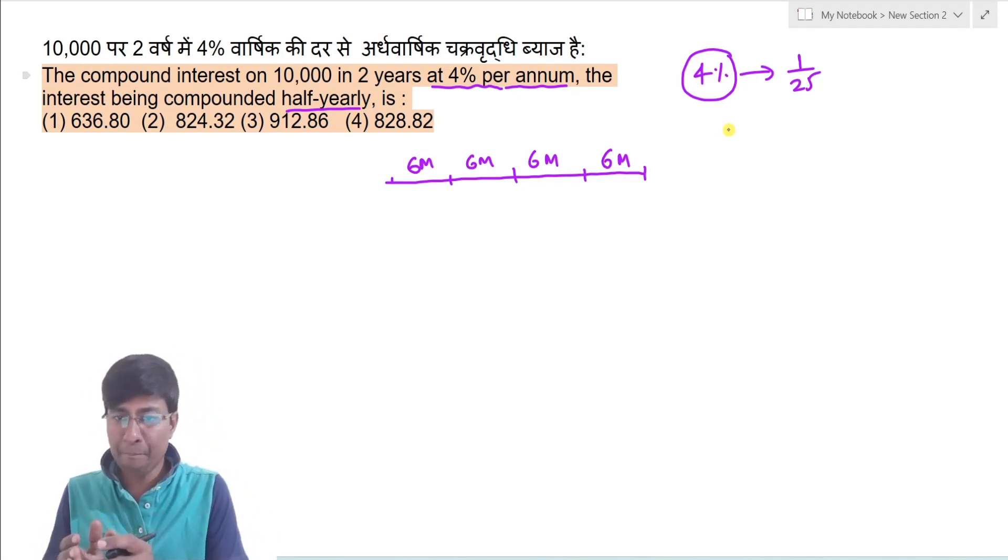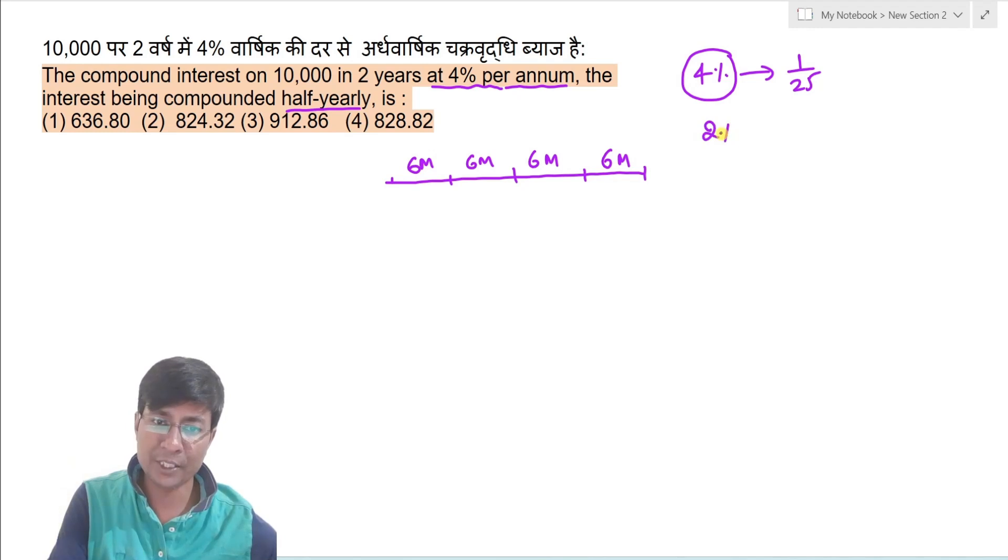Agar aap six month ka rate of interest dekho, toh ye ho jayega iska half. Jaise hi aapne time ko half kiya hai, toh aapka rate of interest bhi half ho jayega. Toh ab woh ho jayega two percent or that implies one upon fifty. It means shuru me twenty-five rupees pe one rupee ka interest milta tha, baad me ab 50 pe 1 rupee ka interest milta, ye clear hai.